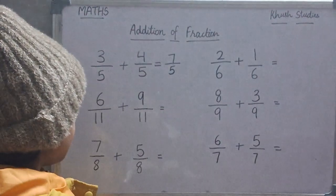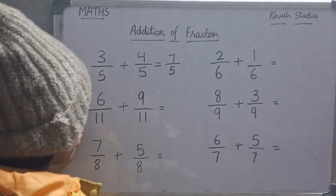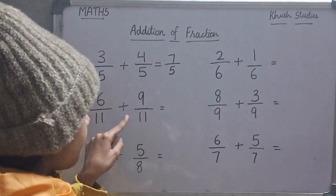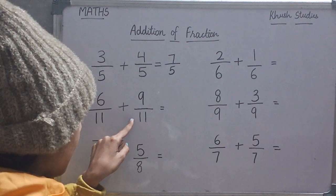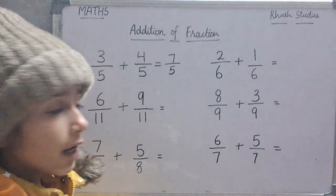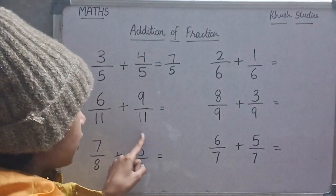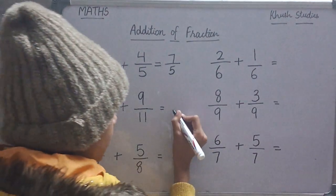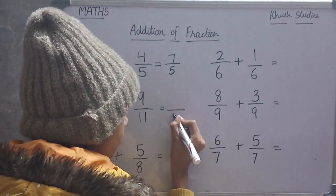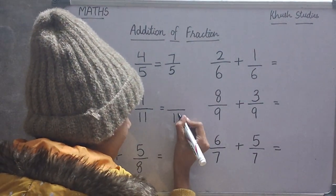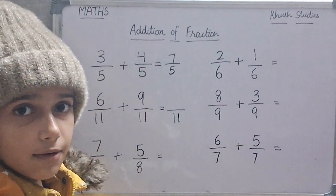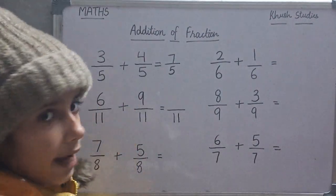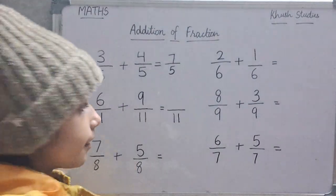Now, we will add 6 upon 11 with 9 upon 11. In both, the denominators are same. So, in the answer, also same. Now, we will add the numerators. 6 plus 9 is 15, so the answer is 15 upon 11.